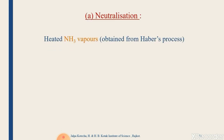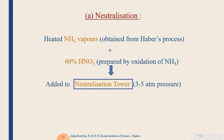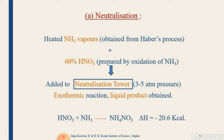In the prilling method, the first step is neutralization. Heated ammonia vapors obtained from the Haber's process are combined with 60% nitric acid prepared by oxidation of ammonia. These are fed into a neutralization tower maintained at 3 to 5 atmospheric pressure. The reaction is exothermic: nitric acid reacts with ammonia to give ammonium nitrate with liberation of heat, yielding liquid ammonium nitrate as the product.